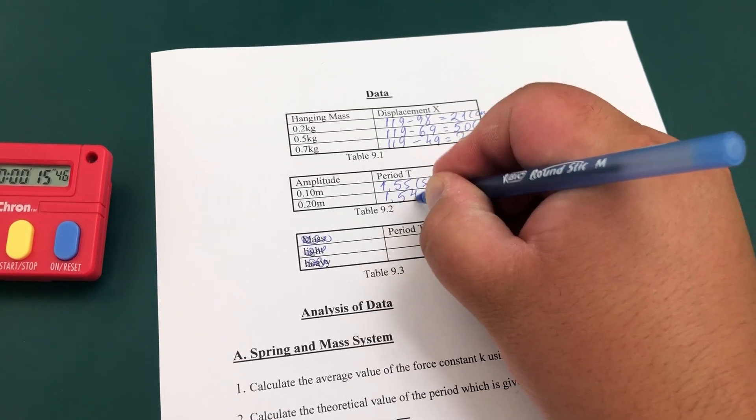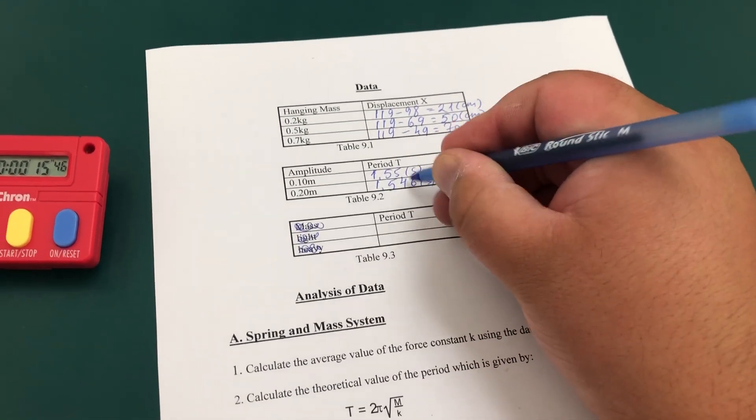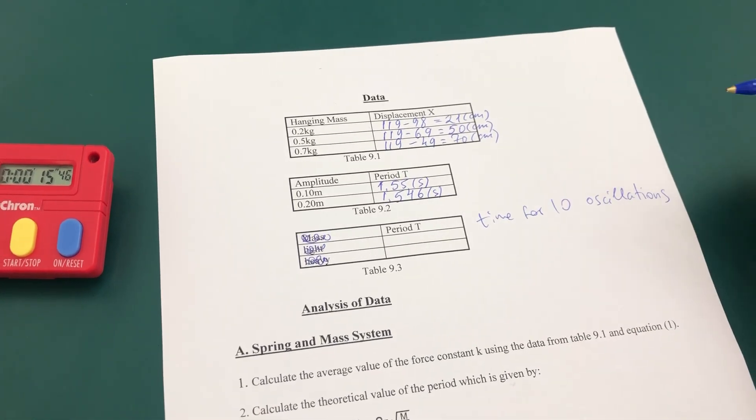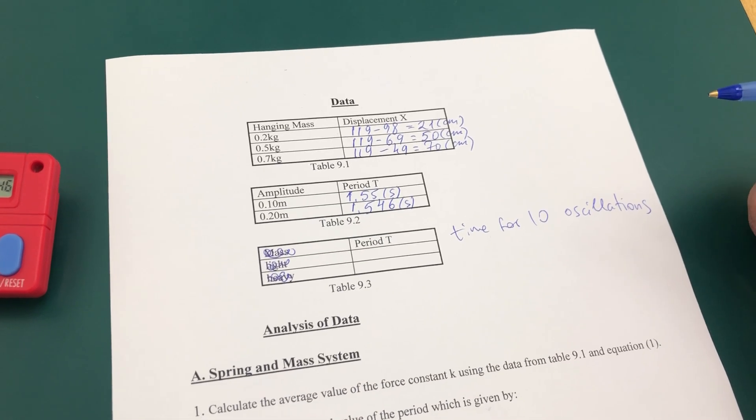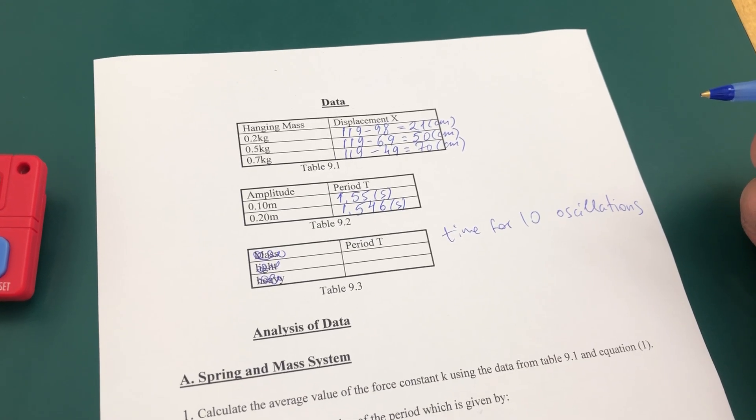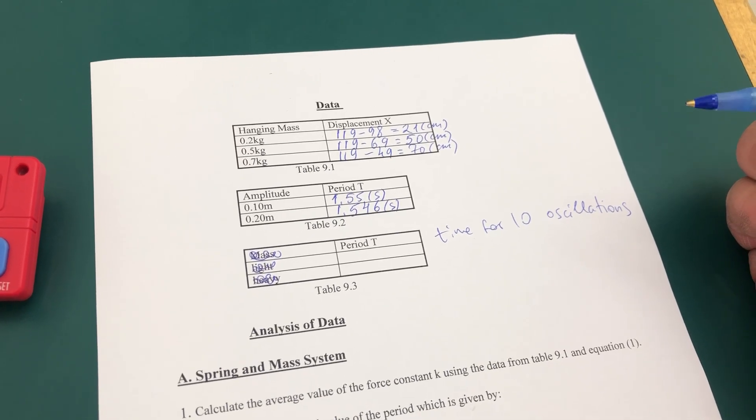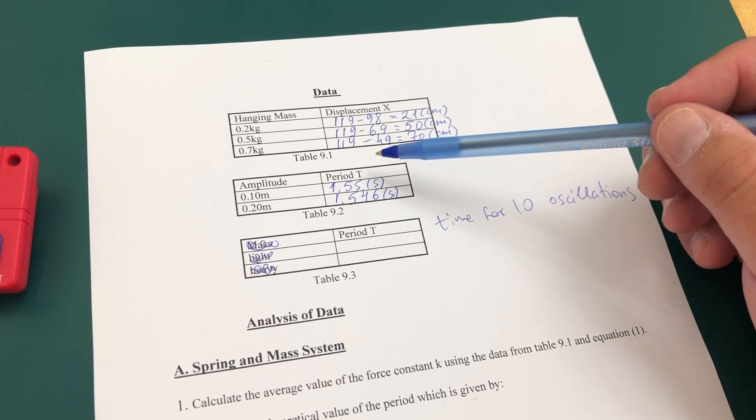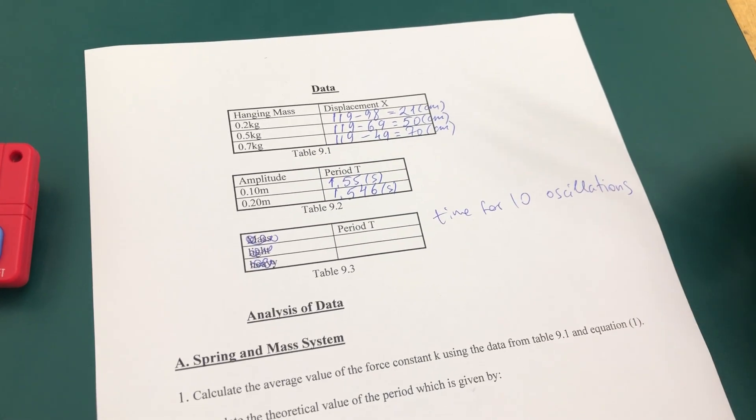1.54, but then there is a six here, so with three significant figures it's pretty much the same result. Now the question is, is that a coincidence, or is there a reason for that, or did something go wrong? You have to answer that question: does the period depend on the amplitude?